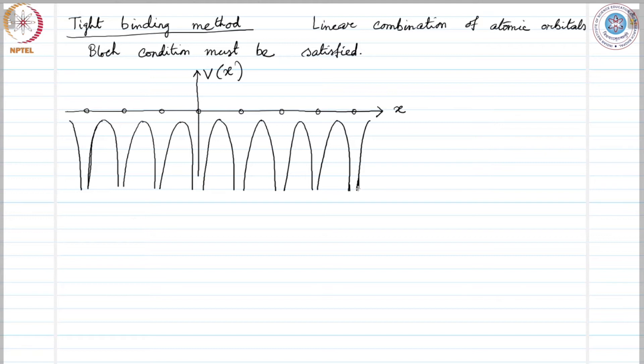If we say that the electron under consideration has this much energy which we call E_A, this site we call T_0. This is T_1, T_2, T_3, T_4 and so on. In this direction, it is T minus 1, T minus 2, T minus 3 and so on.